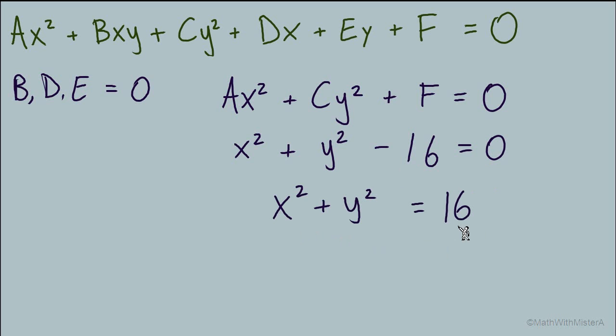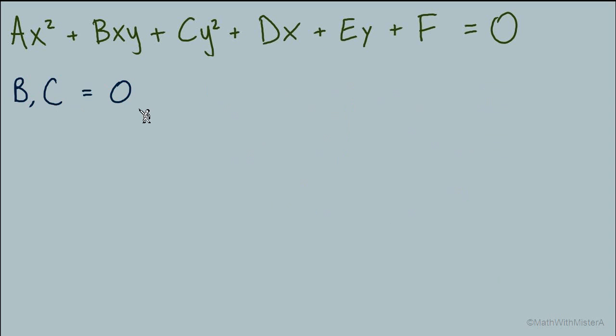So as we try to differentiate between different types of equations when they're starting out in this form, we'll need to pay attention to some of the specific coefficients. Let's squeeze in one more example. What if b and c equal 0?